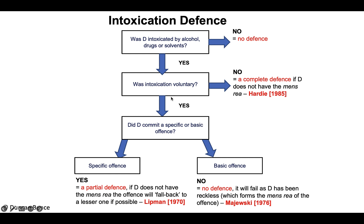Presuming the defendant freely chose to be intoxicated by alcohol, drugs, or solvents, the key issue is establishing whether the crime committed is one of specific intent or basic intent. A specific intent offence is a crime we can categorise by its mens rea as one that can only be committed by intent only, making these the most serious types of crimes. For example, murder can only be committed with an intent to kill or cause serious harm — malice aforethought, express or implied.